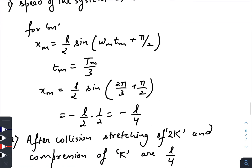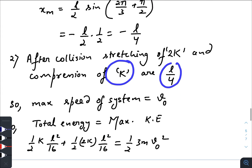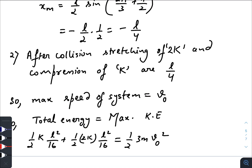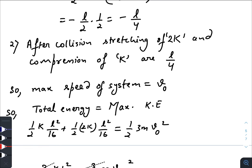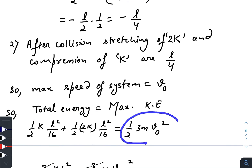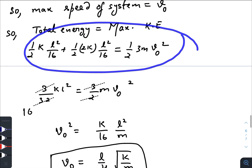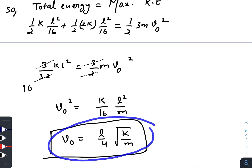So the collision takes place at l/4 from the mean position. Just after the collision, the stretching of the 2k spring is l/4 and the compression of the k spring is also l/4. Now, let the maximum speed of the system be v₀. The total energy just after collision is (1/2)(2k)(l/4)² + (1/2)(k)(l/4)², which equals the maximum kinetic energy (1/2)(3m)v₀². Solving this gives v₀ = (l/4)√(k/m).